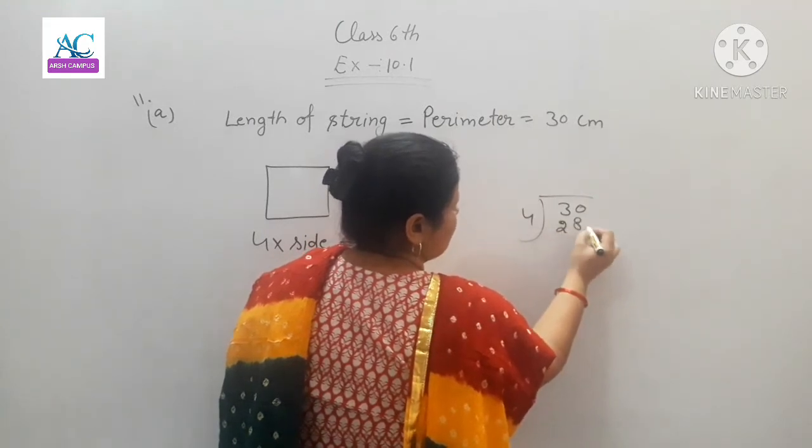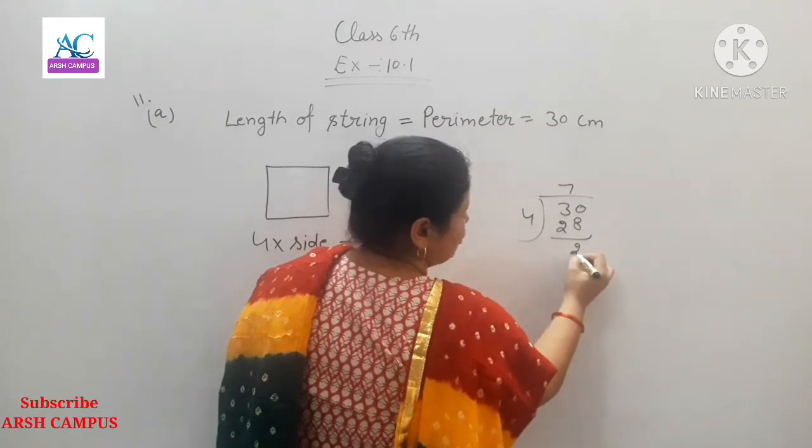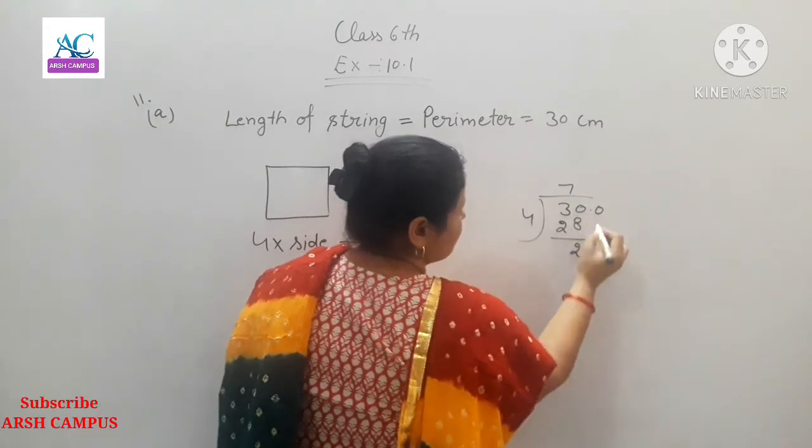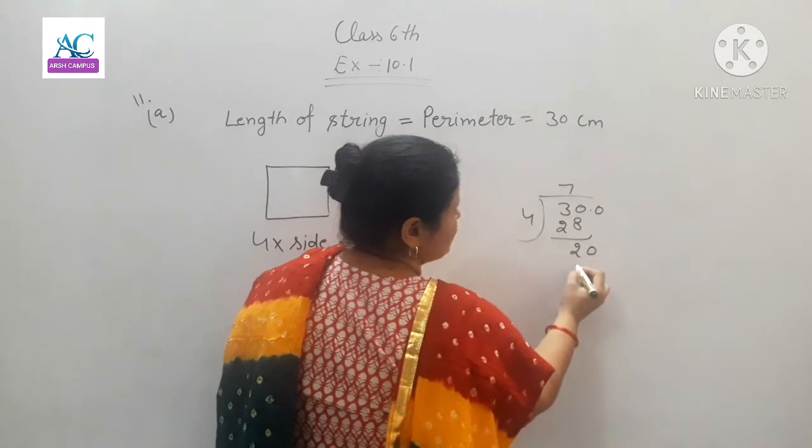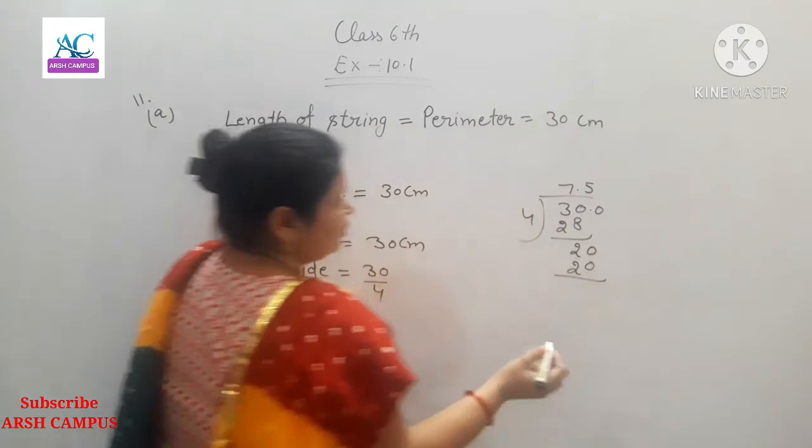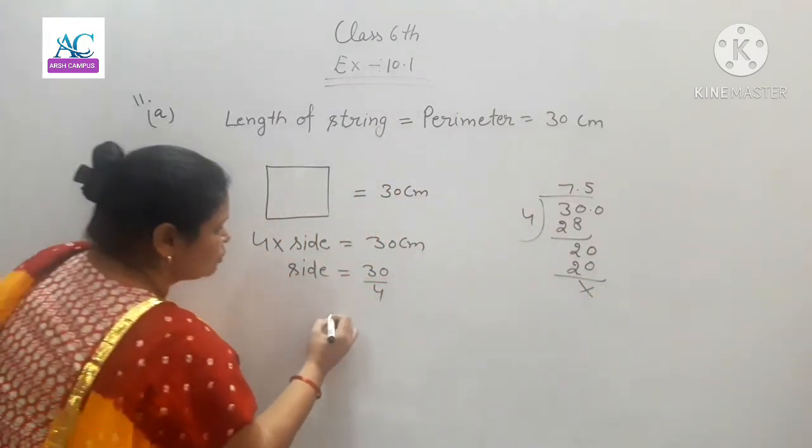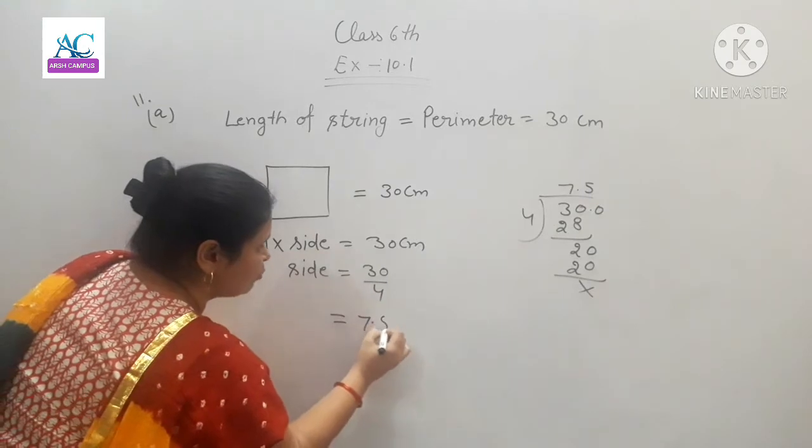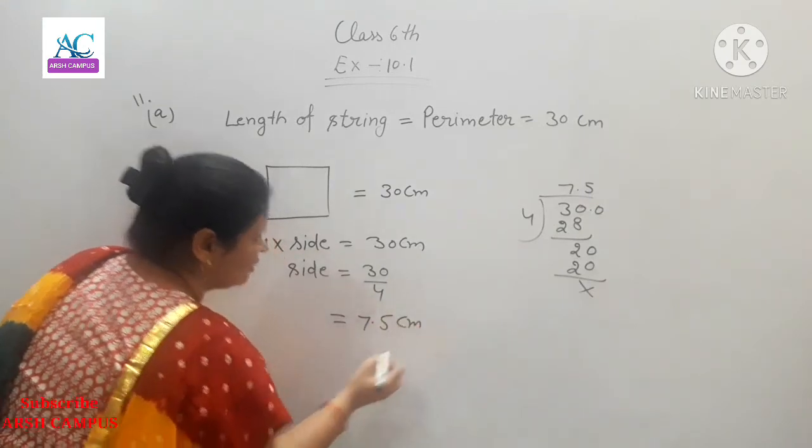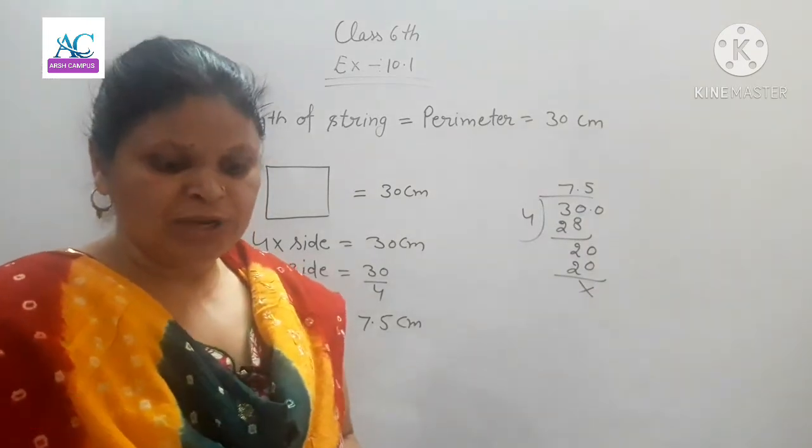7 goes into 28, placing the decimal point, then 5 goes into 20. So the side is 7.5 centimeters. One side is 7.5 centimeters.